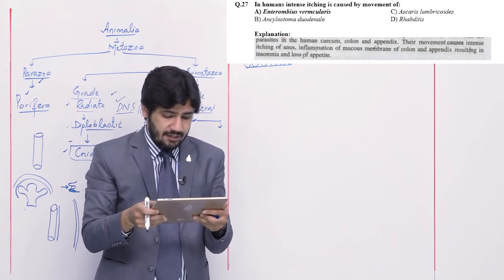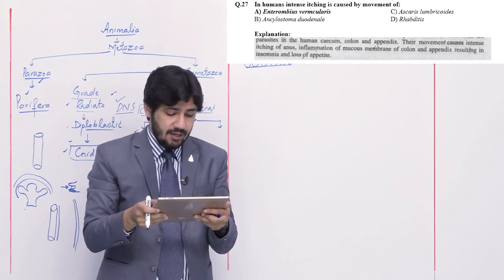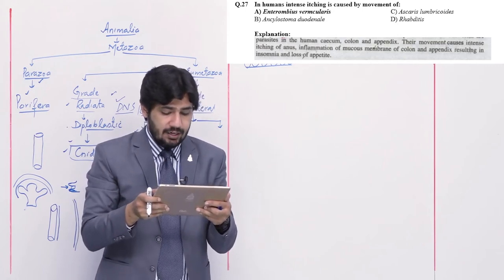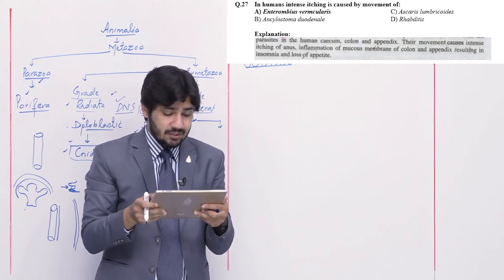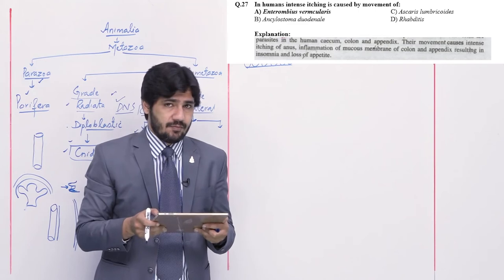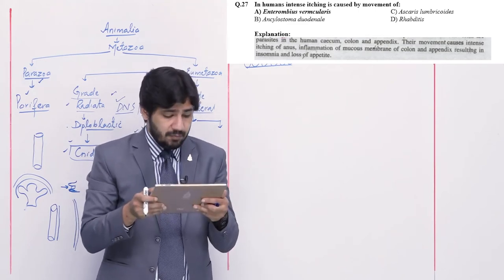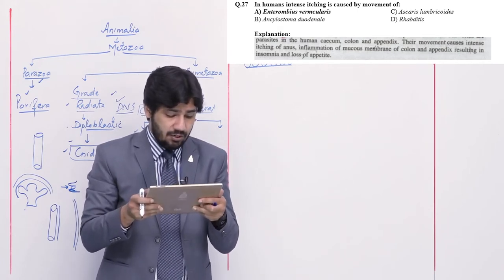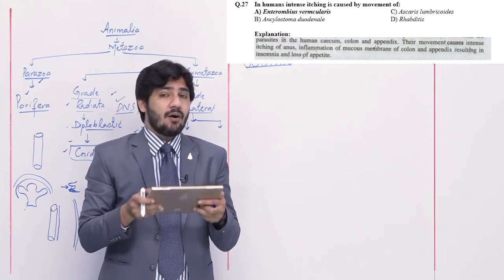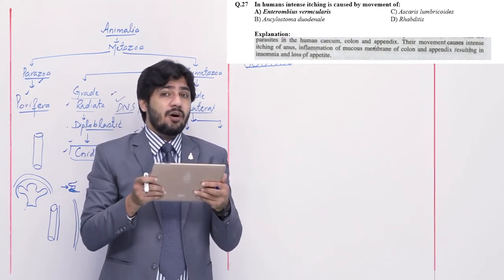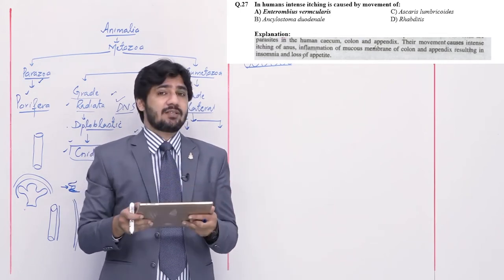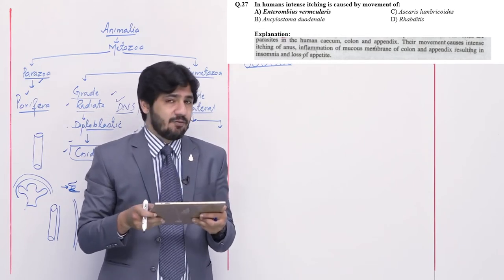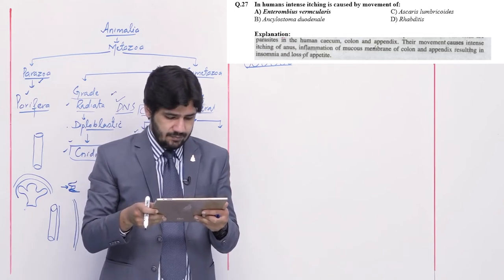Question number 27: in human intestine, itching is caused by the movement of — alpha Enterobius vermicularis, beta Ancylostoma duodenale, charlie Ascaris lumbricoides, or delta Rhabditis. Intestinal itching is caused by pinworm — Enterobius vermicularis — right option is alpha. Ancylostoma duodenale causes hookworm disease, produces anticoagulant, and reduces physical and mental growth. Ascaris lumbricoides is a parasite of the intestine. Rhabditis is not a parasite.